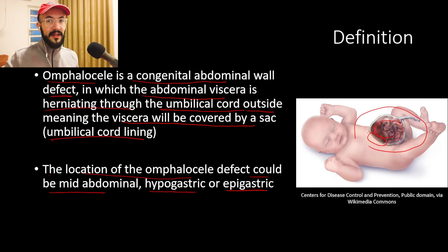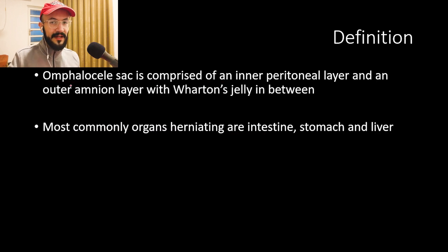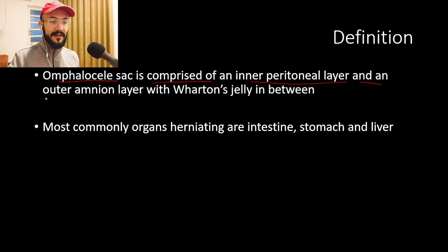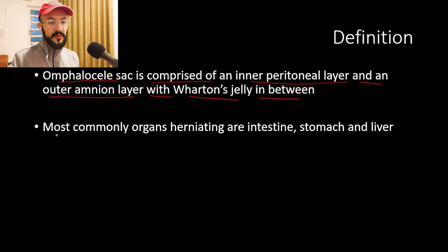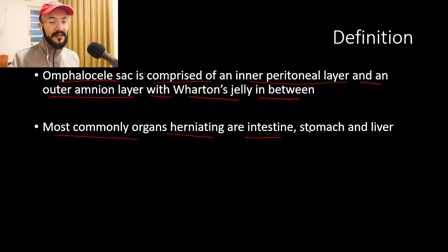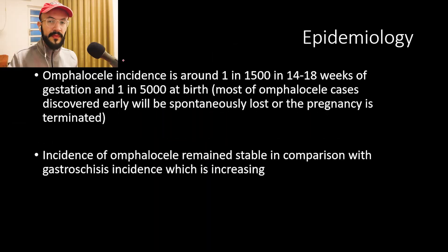Comparing to gastroschisis, the location of the defect in gastroschisis will be almost always to the right of the umbilicus. The omphalocele sac is comprised of an inner peritoneal layer and an outer amniotic layer with Wharton's jelly in between. The most commonly herniated organs through this defect are the intestine, stomach, and liver.